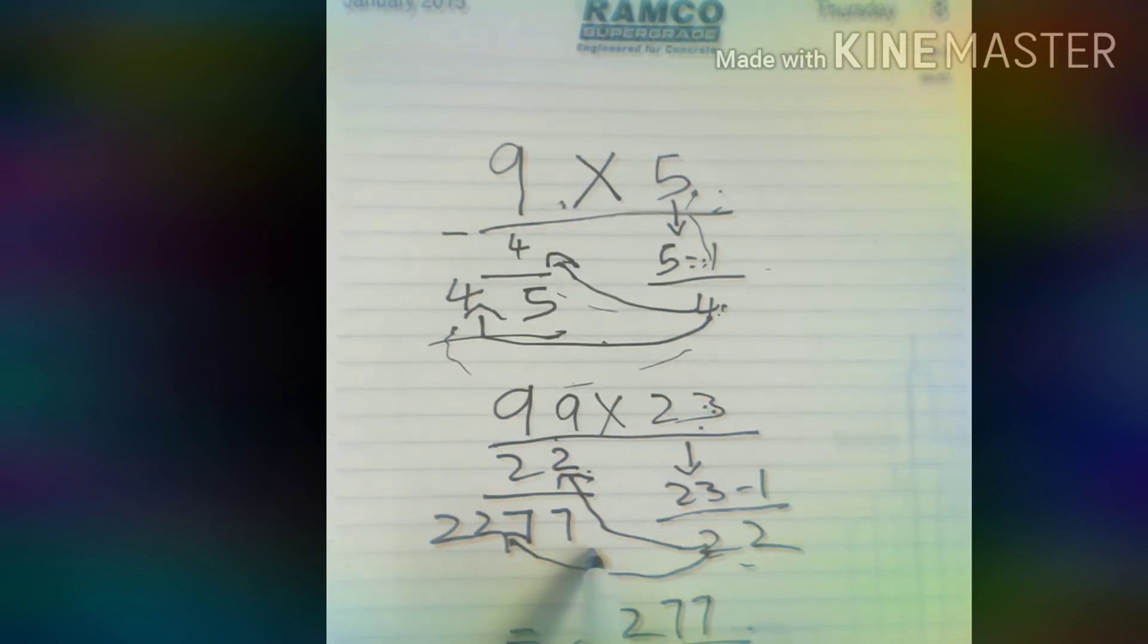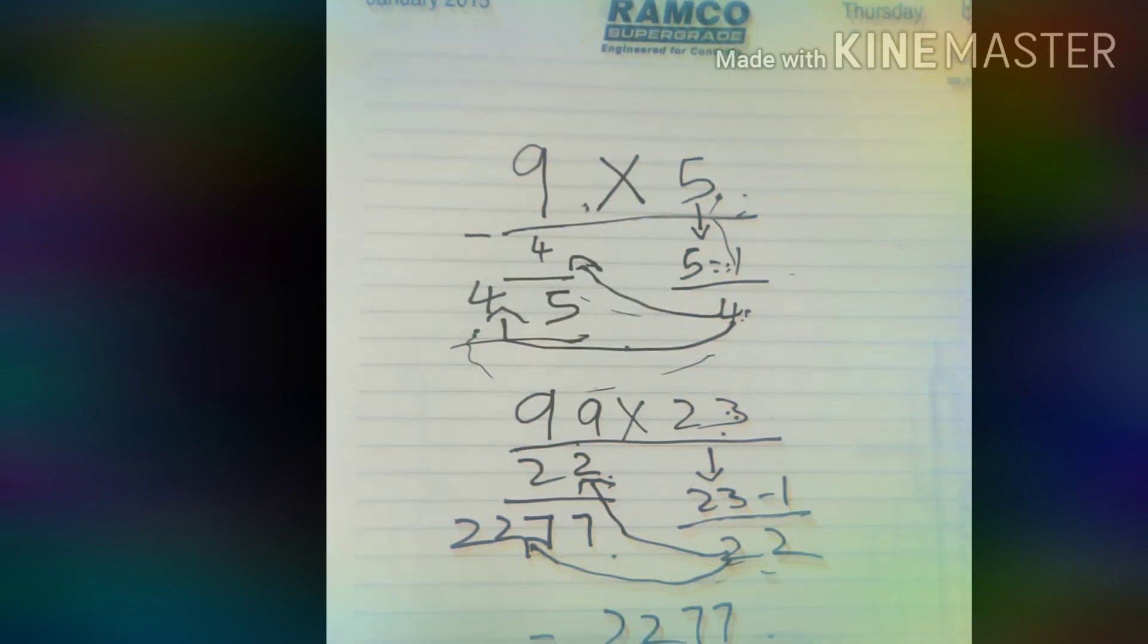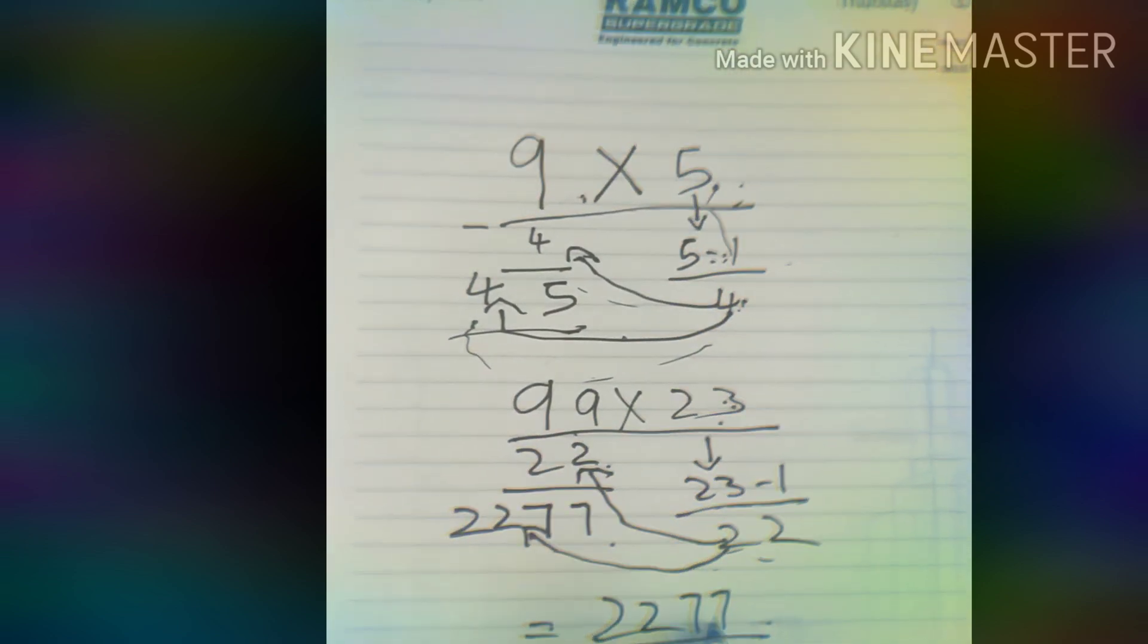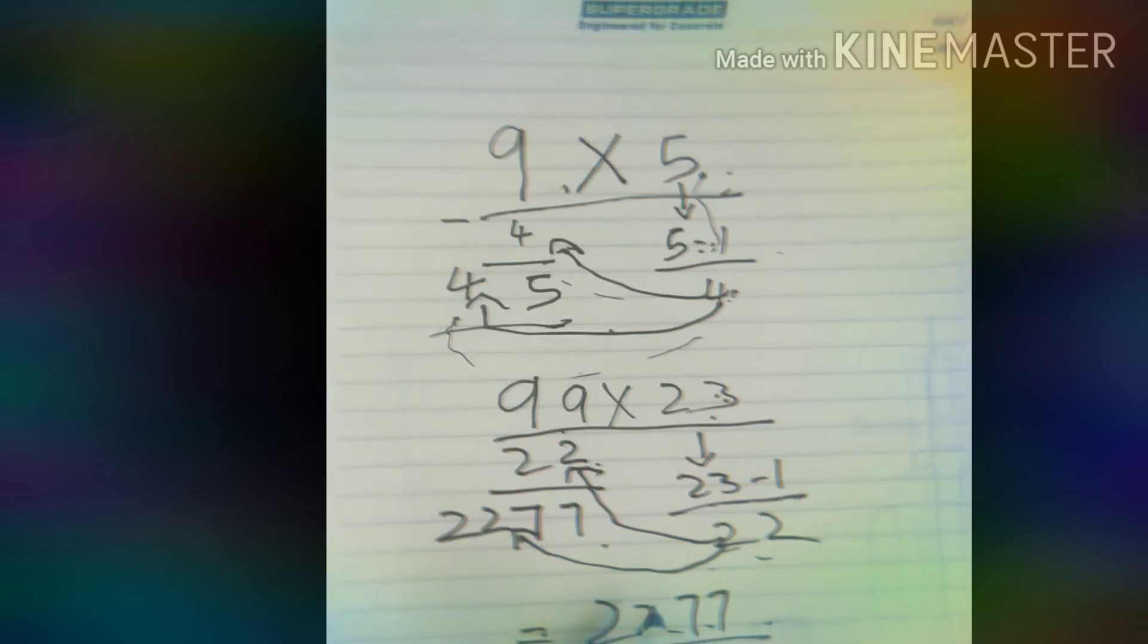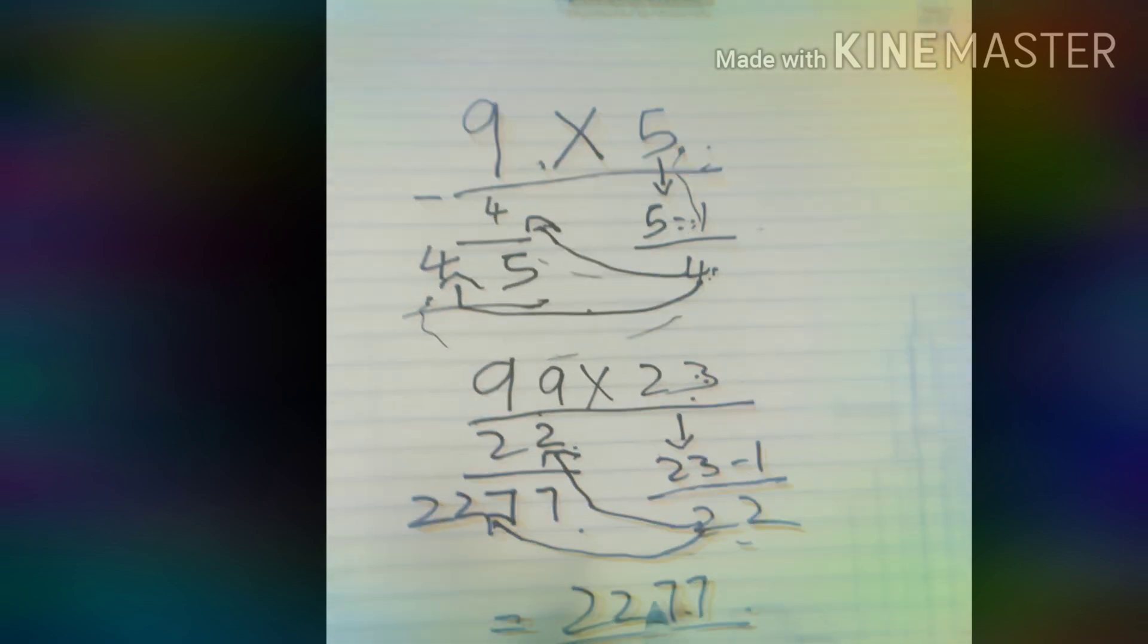And minus from 99 gives 77. Carried out here, it will be 2277. We could do this one for any number.